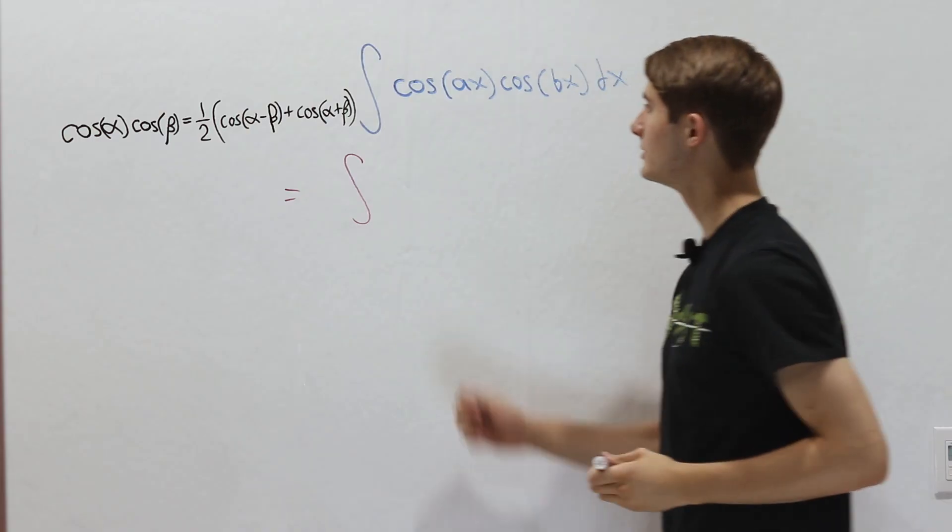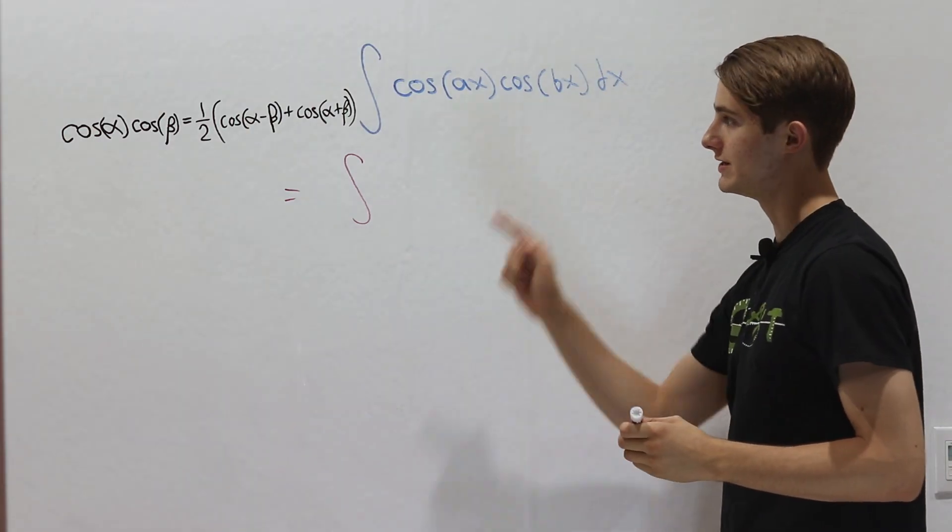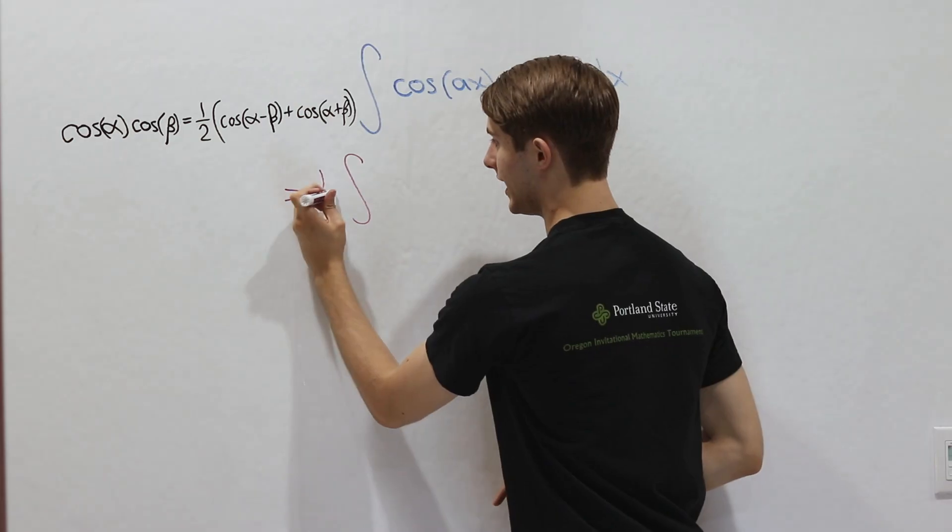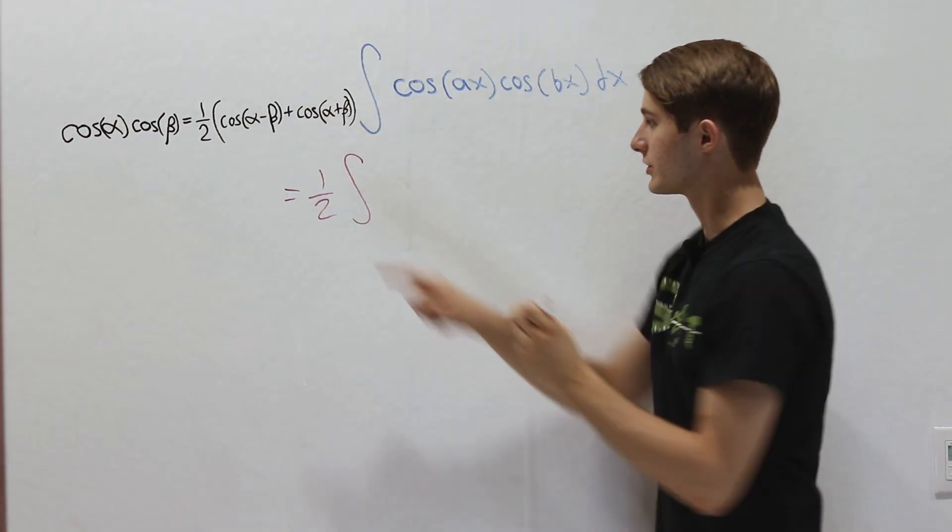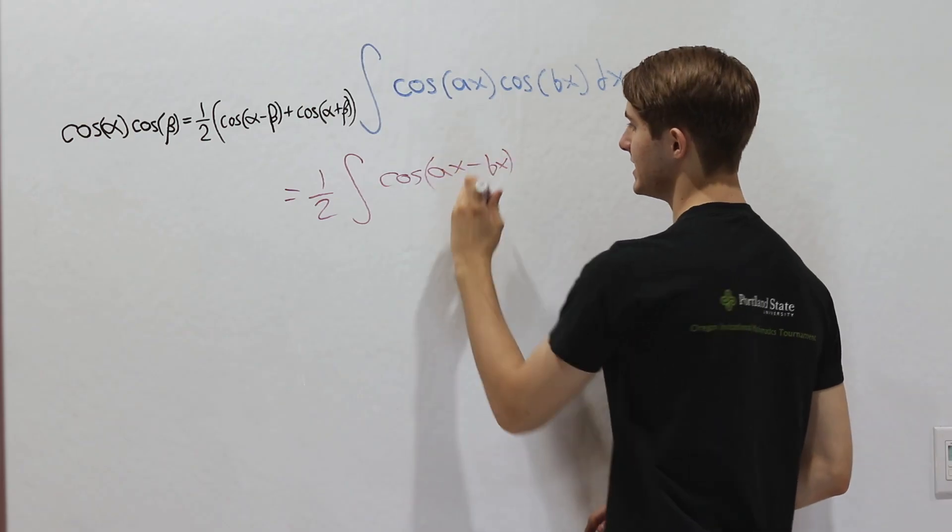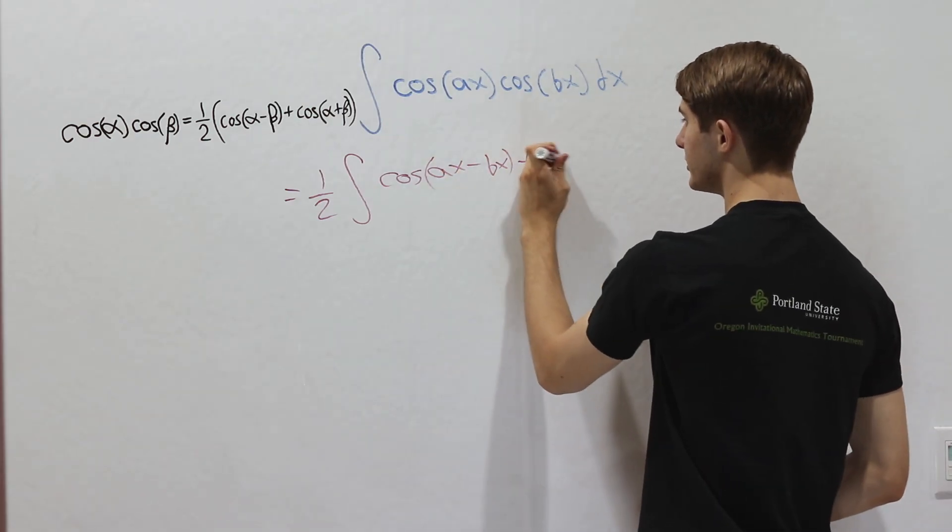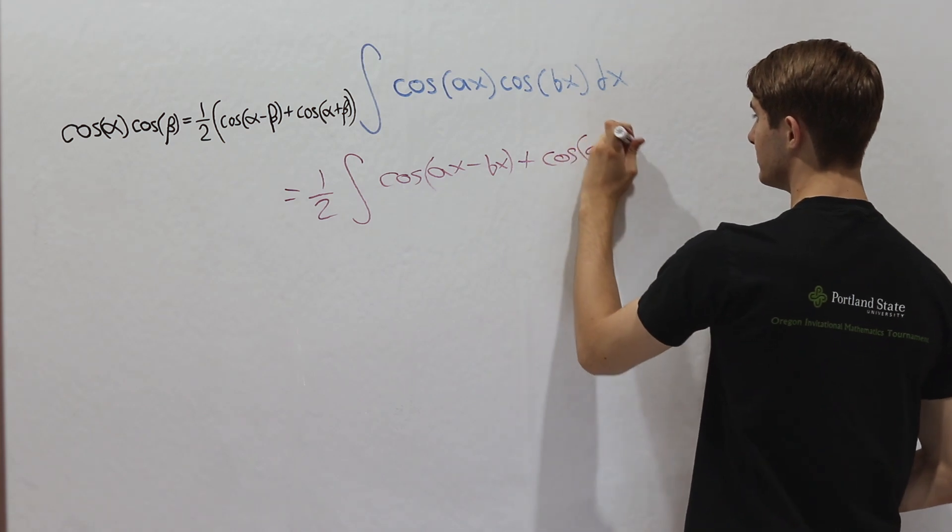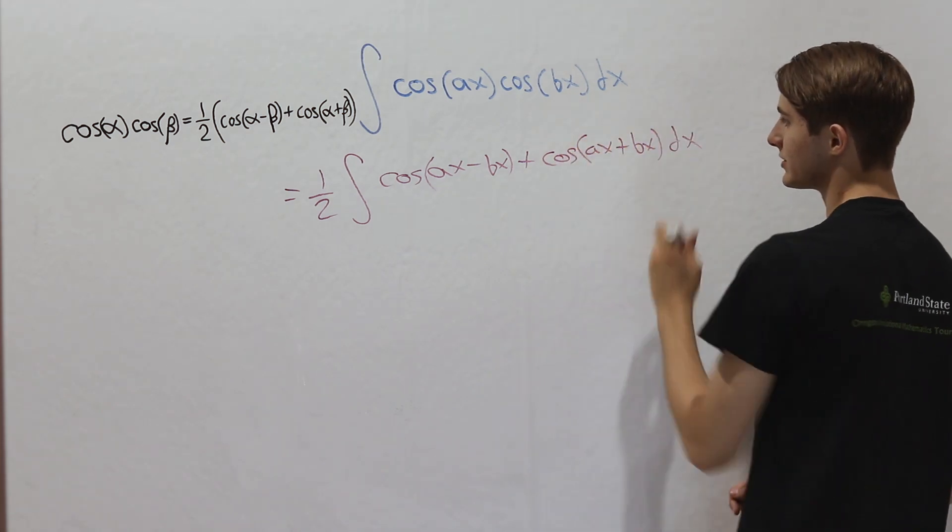So let's rewrite this integral. We want cosine ax times cosine bx, and we're going to use this identity. Notice first we have a 1 half coming out to the front, and then we have a cosine of the first input minus the second input, so ax minus bx, and then we add cosine of the first input plus the second input, so ax plus bx dx, just like that.